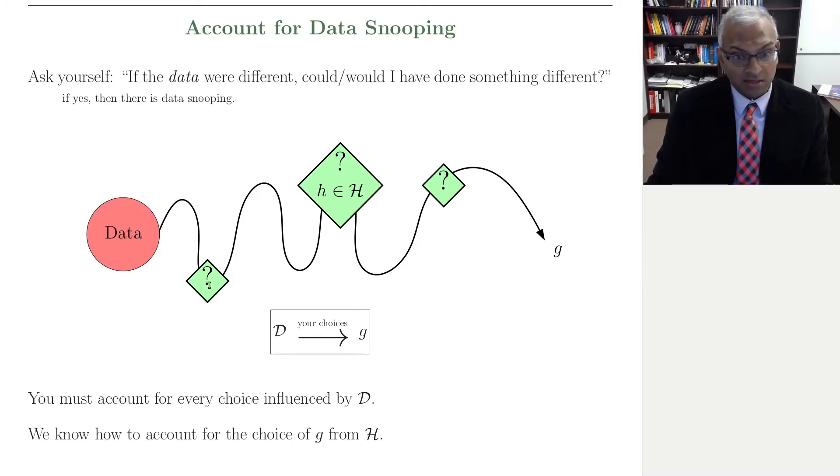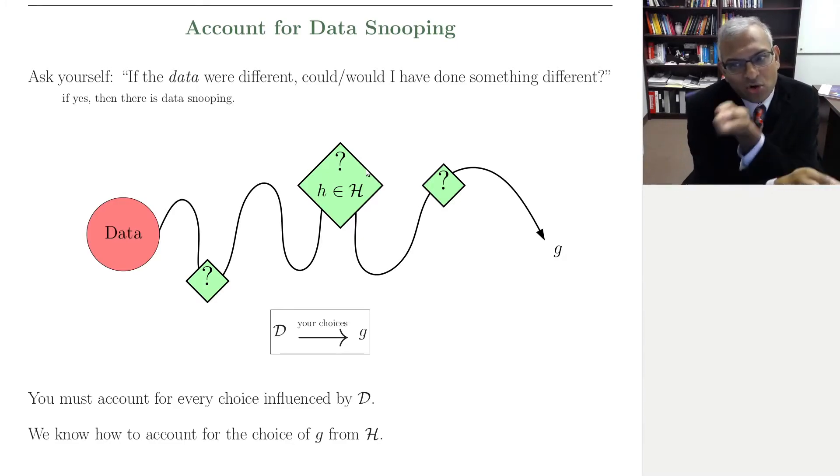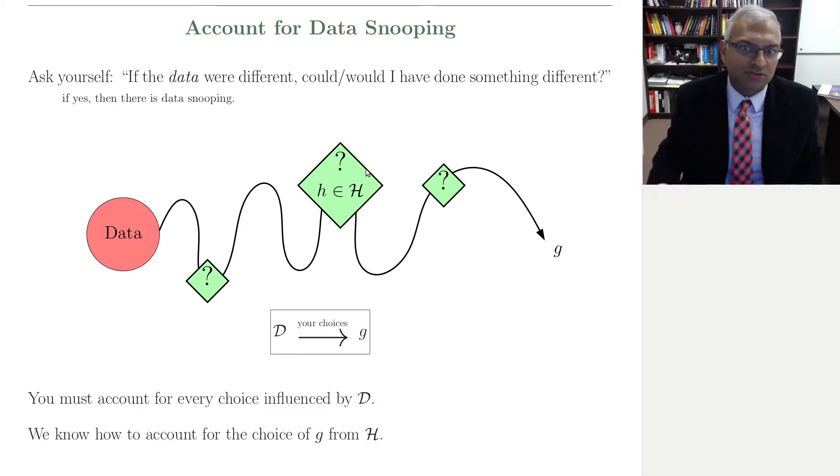So the ideal setup is there are none of these other green boxes except the one green box, which represents your choice of final hypothesis from H, and we know the price you pay for that. That's the VC error bar. Now when you make other choices, or if you had the potential to make other choices, you have to pay the price, you have to account for the choices you had, not for the choices you used.